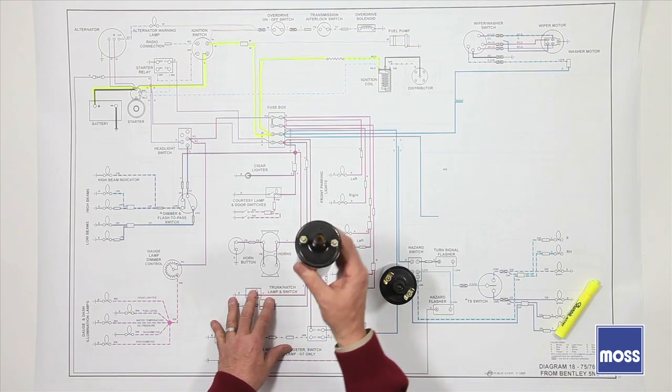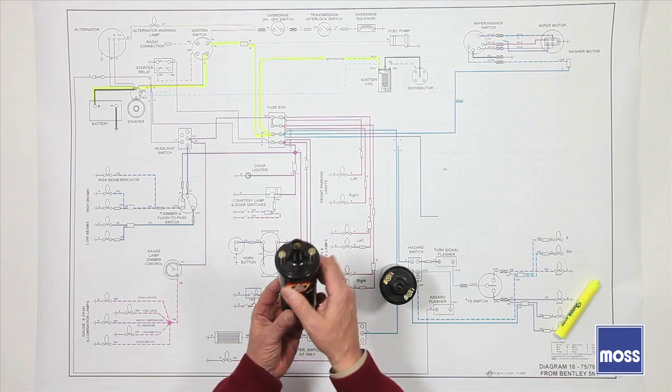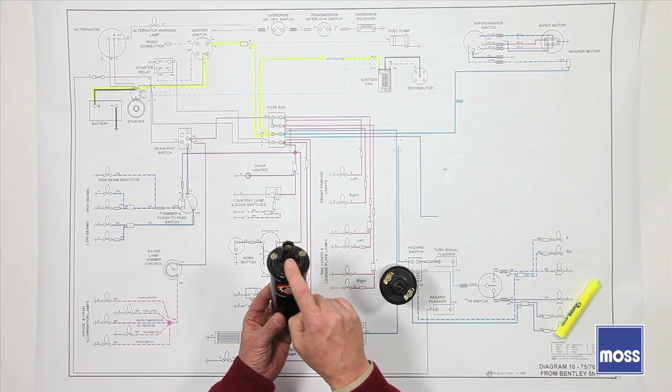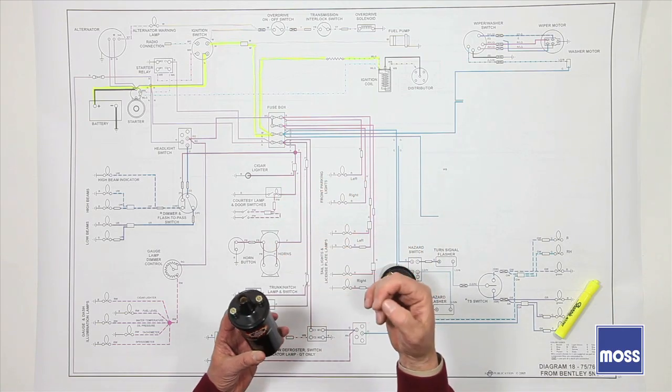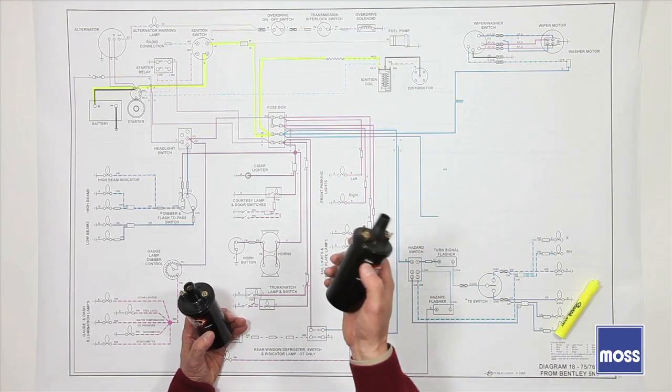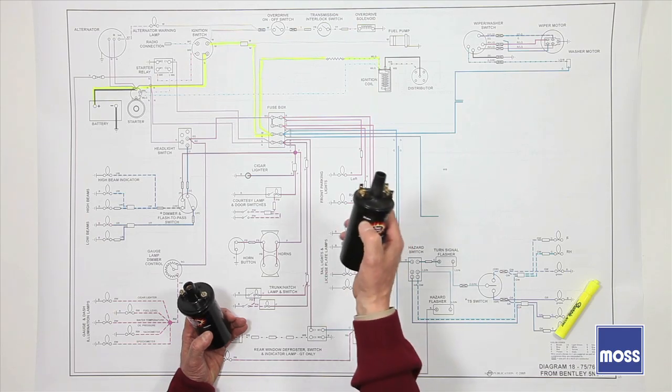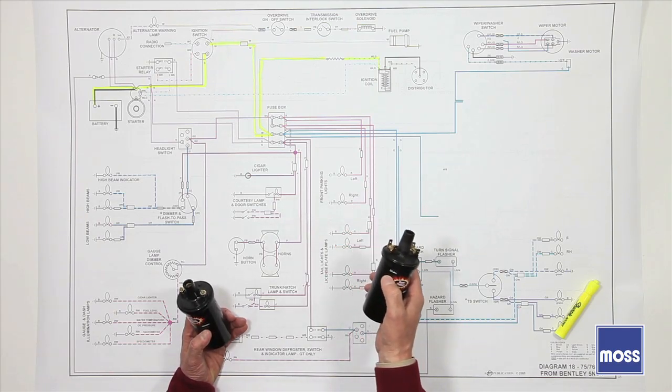If the car has a 1.5 ohm coil in it, somewhere in the car is a ballast to go with this. 1.5 with this, 1.5 with the ballast gives us 3. Any non-ballasted coil works in a system that doesn't have a ballast in it. It has its own full 3 ohms all by itself there.